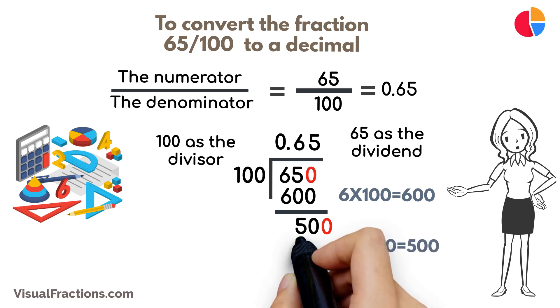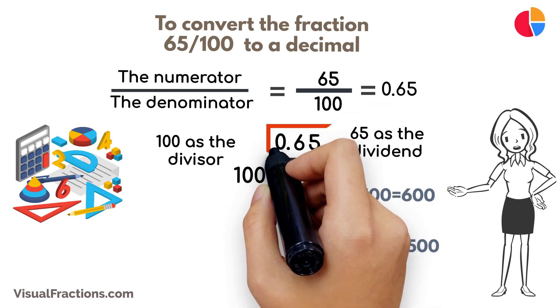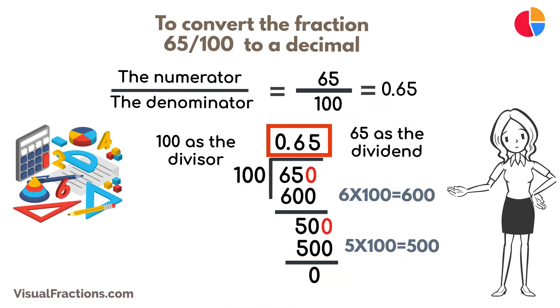Multiplying 5 by 100 gives us 500. When we subtract 500 from 500, we get a remainder of 0. So, there we have it. The fraction 65 on hundredths converted to a decimal is 0.65.